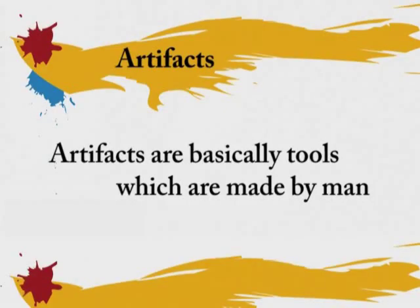Artefacts are basically tools which are made by man. In a site you find many artefacts. We are not only talking about the end products but the entire manufacturing sequence — from the first stage when the raw material nodule is used, all the way to the finished tool.